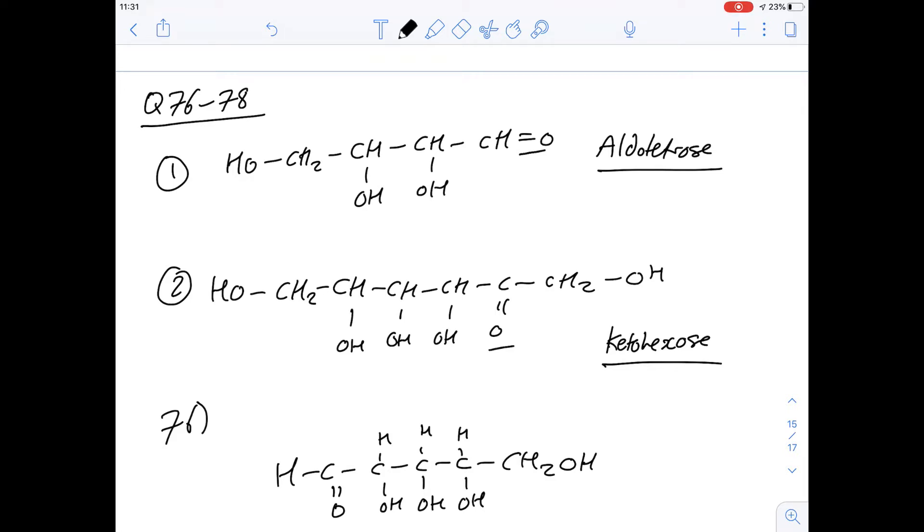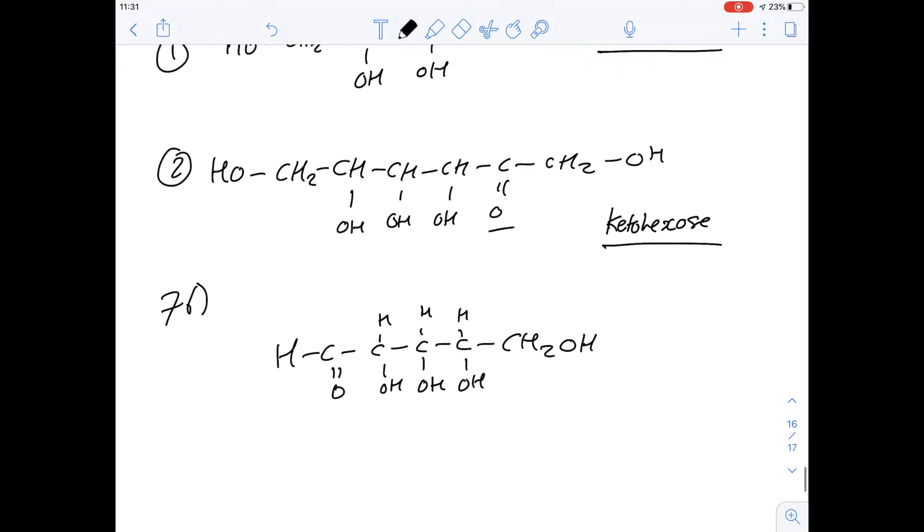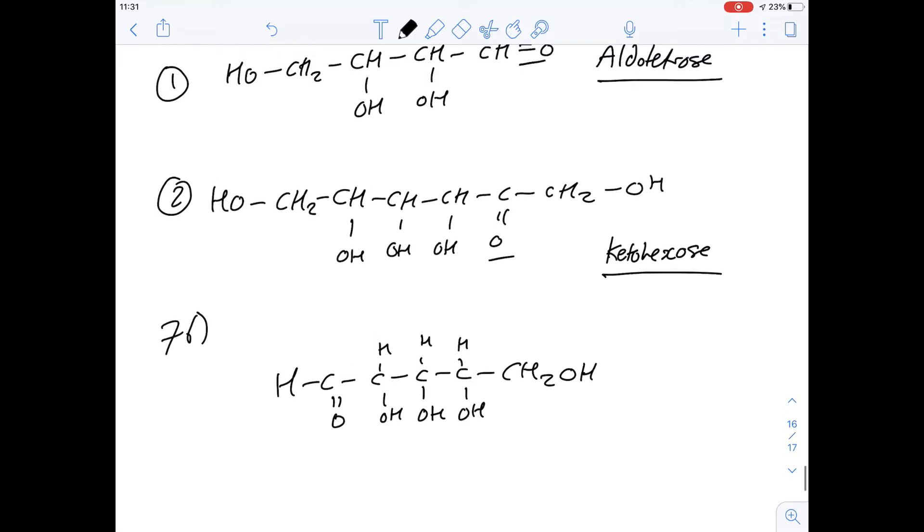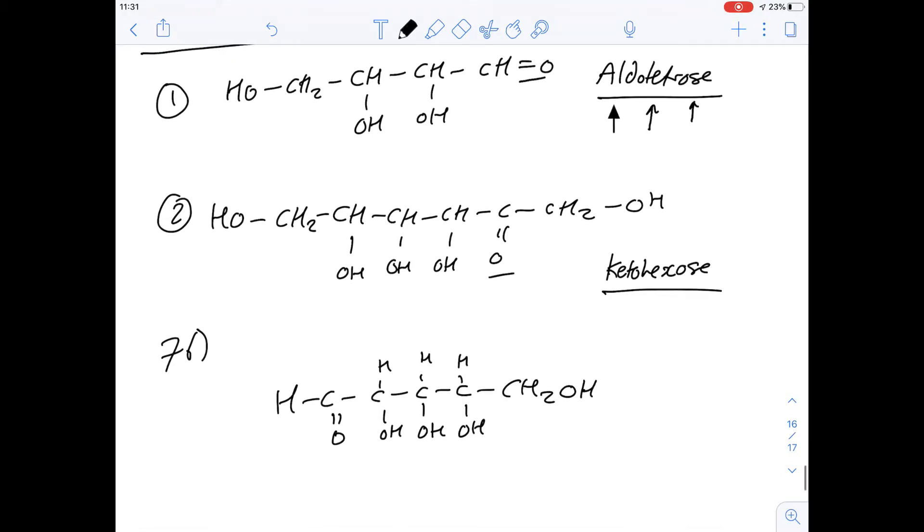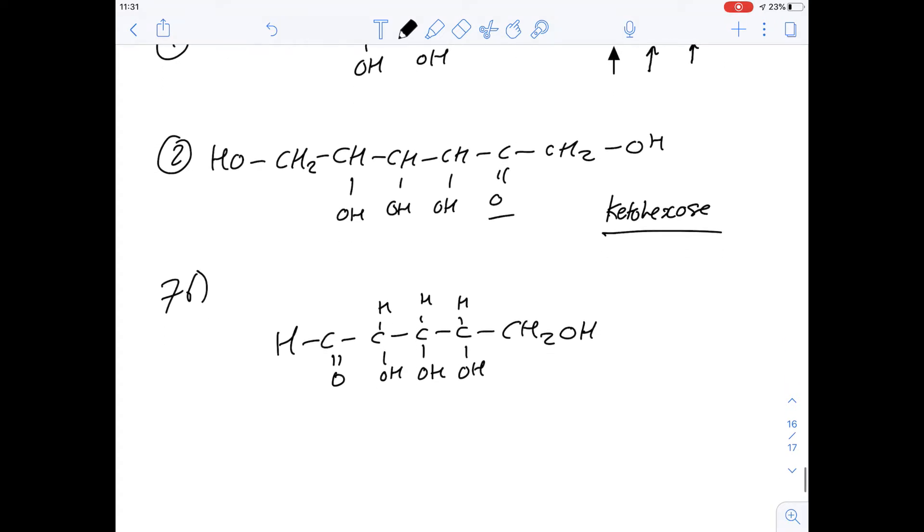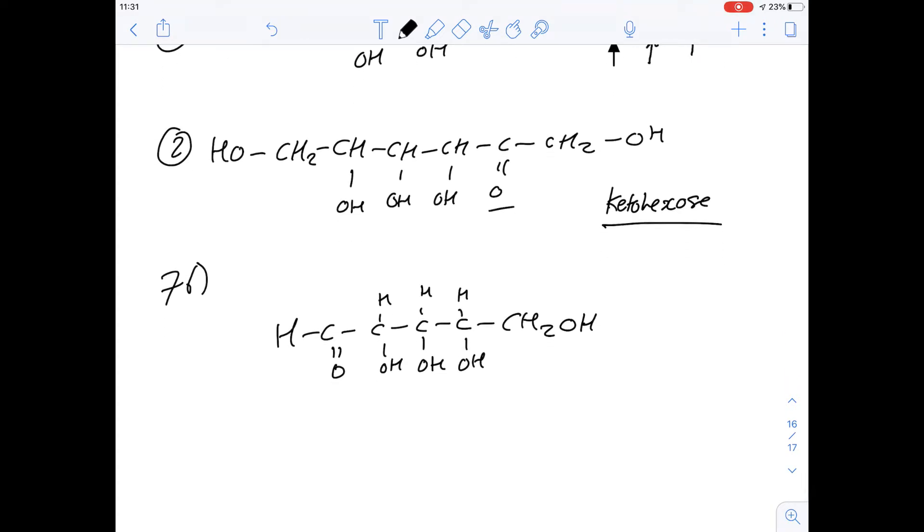Then we're told about what a stereocenter is, which is something you might have already come across before, but we'll come back to why that's important when those questions ask for it. So question 76 says, consider the structure of the following molecule which I've copied out here. It says, which of the following best describes this monosaccharide? So with the examples they've given us, it is whether or not it's an aldo or a keto, and then a number, and then you put -ose on the end. So what if we were to work out what the name of this would be?